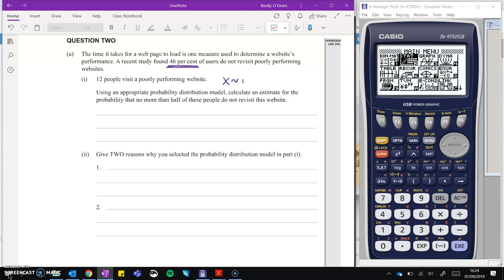So again, I like to summarize these. X will follow a binomial distribution. We've got 12 people visiting, and we're looking at the chances that they do not revisit. So 46% don't revisit. And we want to find the probability that no more than half of these don't revisit. So half is at 6, and we want no more than half, so we can go everything up to and including 6, but not over 6.